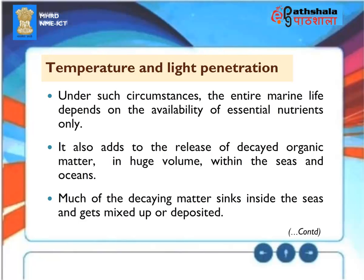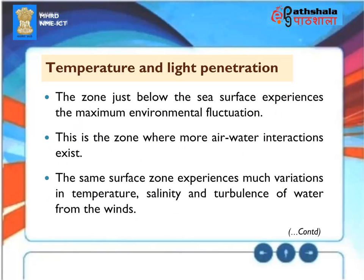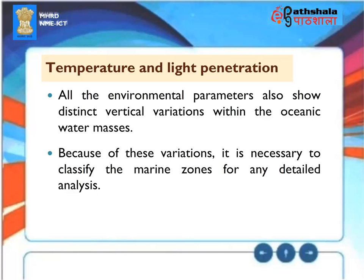Under such circumstances, the entire marine life depends on the availability of essential nutrients only. Much of the decaying matter sinks inside the seas and gets mixed up or deposited. The zone just below the sea surface experiences the maximum environmental fluctuation — this is the zone where more air-water interactions exist. The same surface zone experiences much variation in temperature, salinity and turbulence of water from the winds. All the environmental parameters also show distinct vertical variations within the oceanic water masses, making it necessary to classify the marine zones for any detailed analysis.